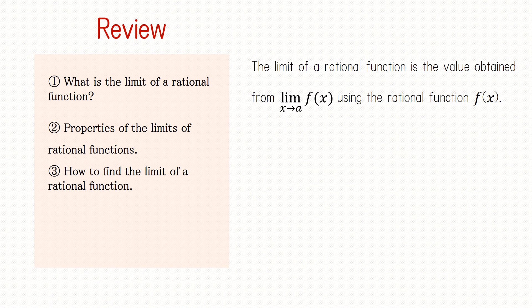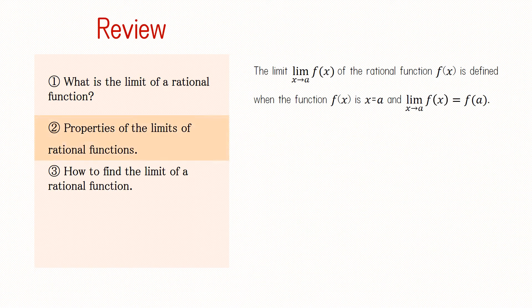Finally, let's review what we have learned. The limit of a rational function is the value obtained from limit x going to alpha f of x using the rational function f of x. The limit x going to alpha f of x is defined when x equals alpha, and limit x going to alpha f of x equals f of alpha. Note that this is only true when the rational function f of x is defined when x equals alpha.